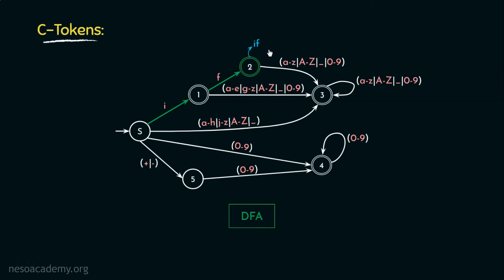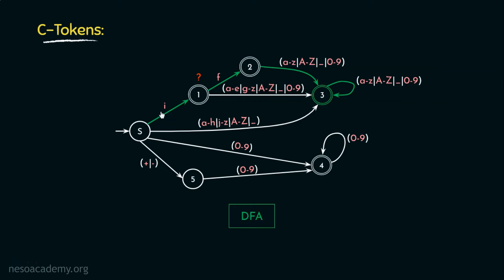If the lexeme has more characters after 'if' — for example 'iffy' — we won't stop at state 2. After the first 'f' we move to state 3, and for the last 'y' we use a self-loop remaining in state 3. State 1 is also a final state because if we see only 'i' with no following 'f', it is not a keyword but an identifier. So if the DFA stops at state 1, it recognizes that as an identifier.